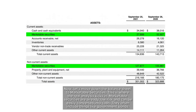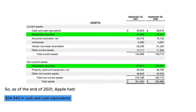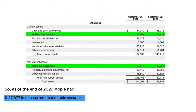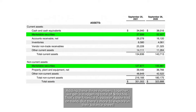Moving down the balance sheet to marketable securities — these are already low-risk and can be easily converted into cash, often including things like government bonds. When calculating a company's true cash position, it's good practice to combine cash, cash equivalents, and marketable securities. As of the end of 2021, Apple had $34,940 in cash and cash equivalents, $27,699 in marketable securities, and $127,877 in non-current marketable securities — all figures in millions. Adding these together gives a staggering total of $190,516 in financial firepower.